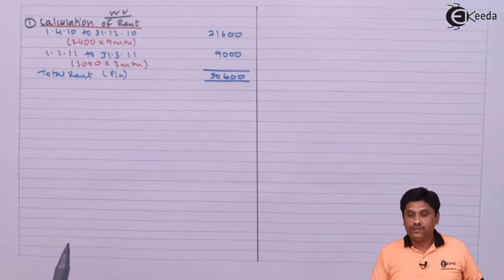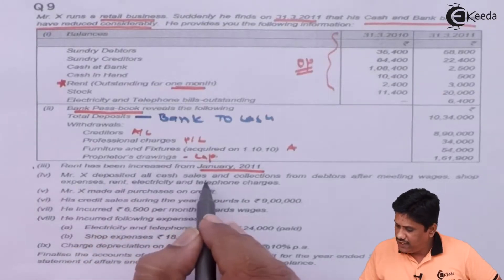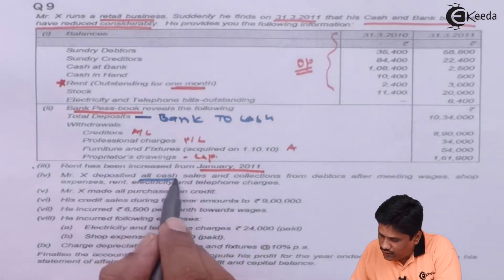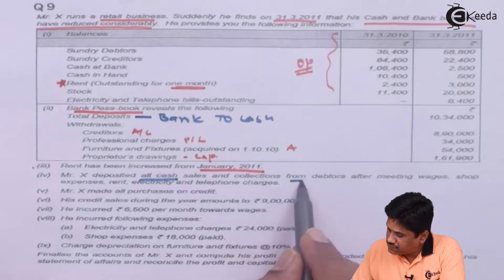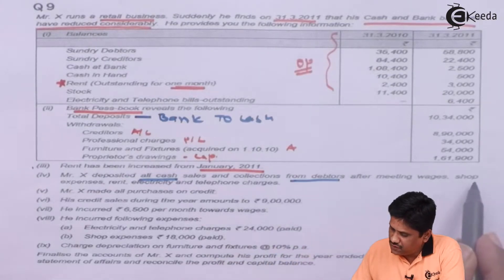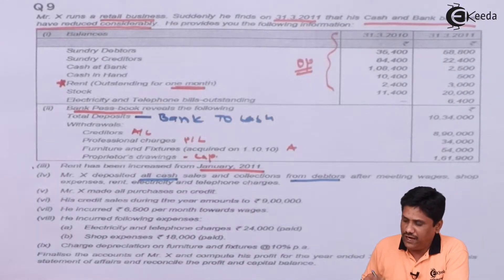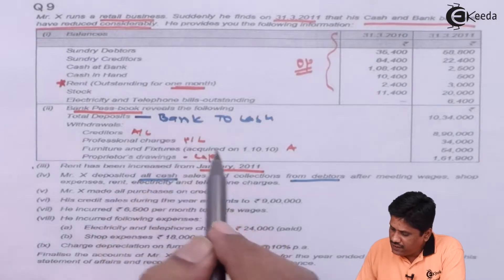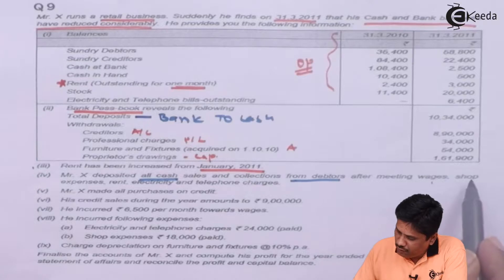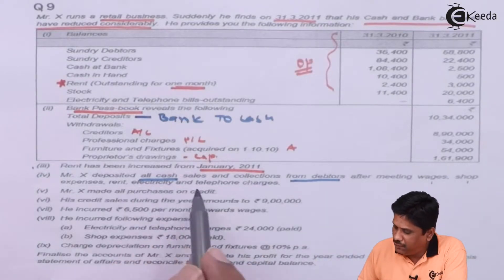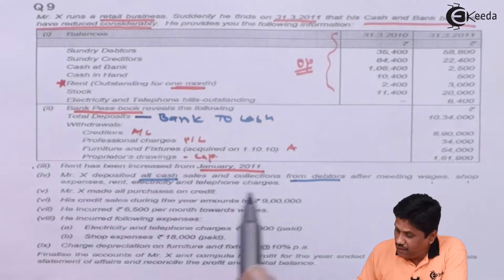Mr. X deposited all cash sales and collections from debtors after meeting wages, shop expenses, rent, electricity, and telephone charges. So all amounts are deposited in the bank after payment of all these expenses. We have paid wages, shop expenses, rent, electricity, and telephone charges — but importantly the amounts are not yet available, so we will come to that later. Mr. X made all purchases on credit, so there are no cash purchases.